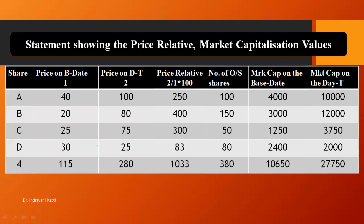Let's directly come to the solution part. At the top, the statement shows price relative and market capitalization values. We calculate the price relative as well as market capitalization values on base date and date T. The first column — share — is given in the problem: four shares A, B, C, D. The second column is price on base date, numbered as column one, and the third column is price on date T, column two. The third column is a new column — price relative — which we have to calculate.